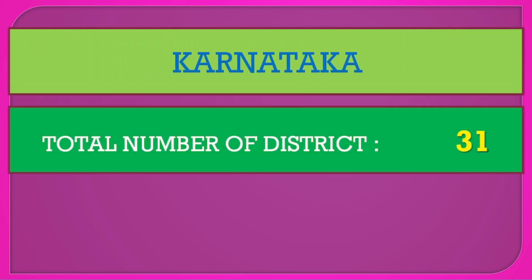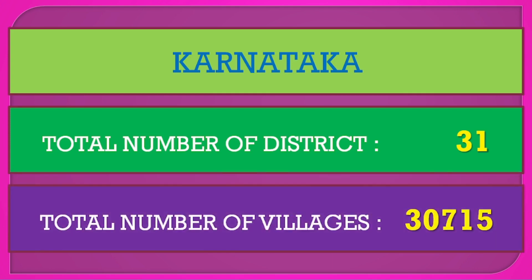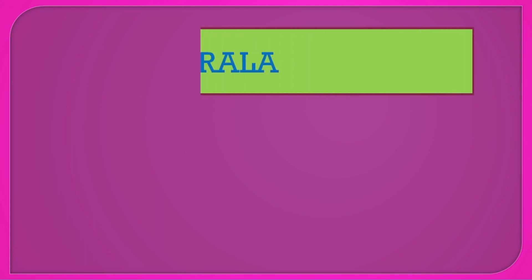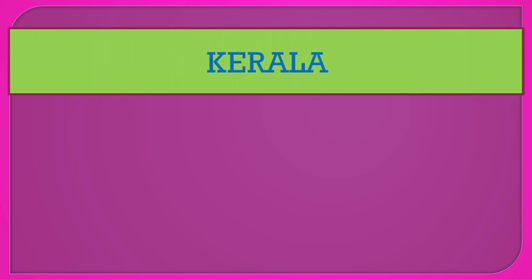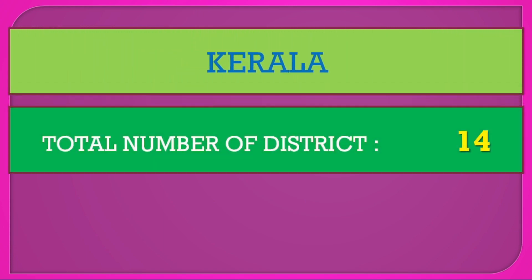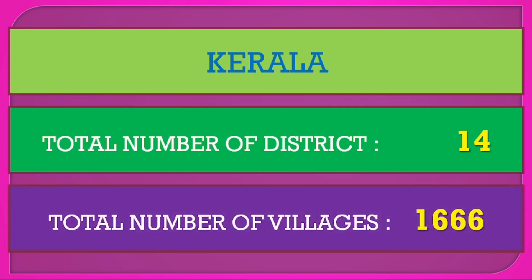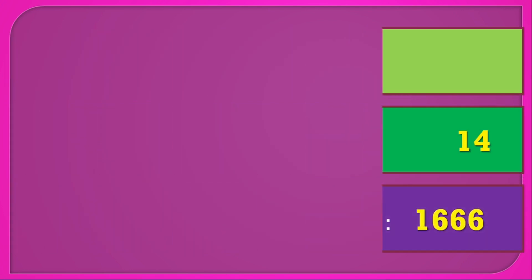Karnataka: total number of districts 31, total number of villages 30,715. Kerala: total number of districts 14, total number of villages 1,666.